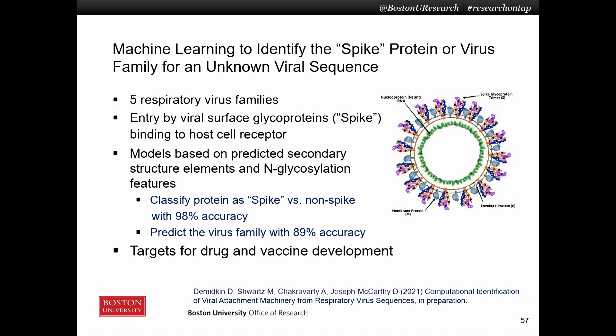Thinking ahead to pandemic preparedness for future pandemics, in a related project we developed a machine learning model to identify the spike protein or its equivalent in other respiratory viruses, and another model to identify the respiratory virus family for an unknown viral sequence. We looked across five respiratory virus families, all of which have a surface glycoprotein or spike, and developed highly accurate classification models based on predicted secondary structure elements and N-glycosylation sites.